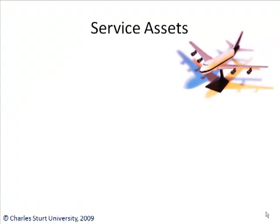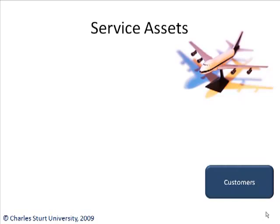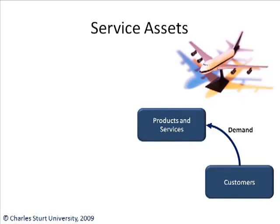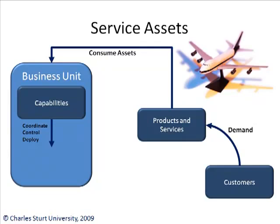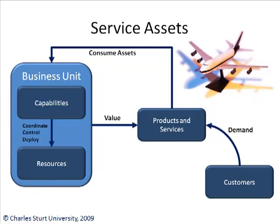So how do these service assets actually work and how do they fit into the model of service management? Say I'm a large airline company and I want to allow my customers to book their flights online. As the airline company, I've got a demand for an online booking service. Let's see if the IT business unit can provide that service. They need assets — capabilities that are able to coordinate, control and deploy the resources needed to deliver products and services to my customer.